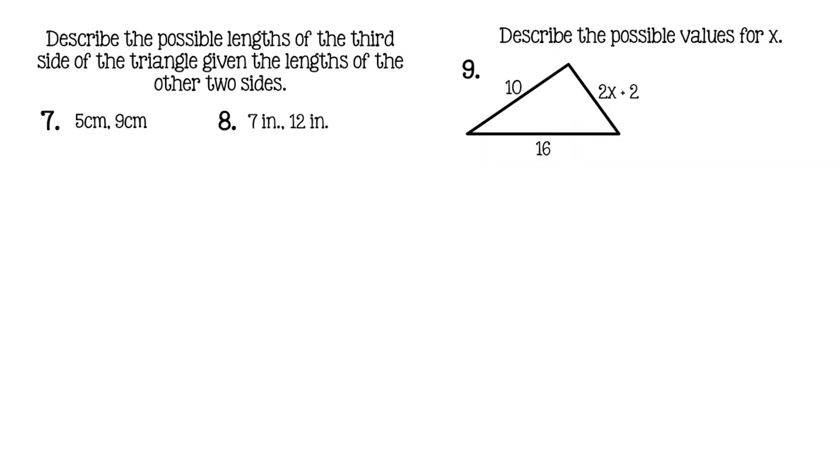Now let's look at some examples of the application of this theorem with some triangles. So number 7 says, what if we have two sides that we know, for example, 5 centimeters and 9 centimeters, and we're trying to find possibilities for the third side. So what you would do is you would take the three sides and assume two possibilities.